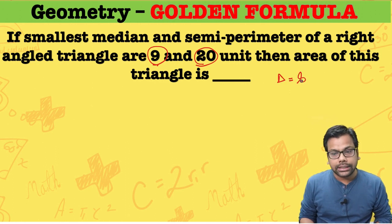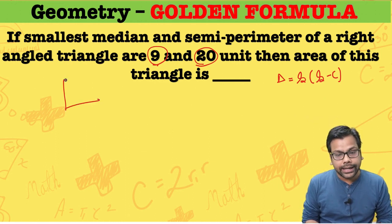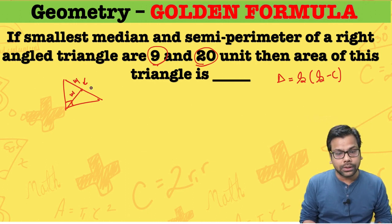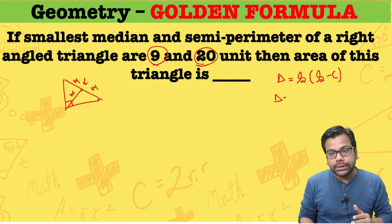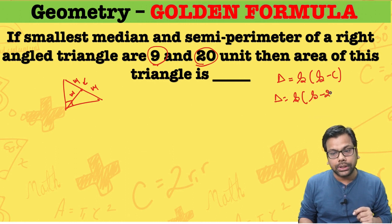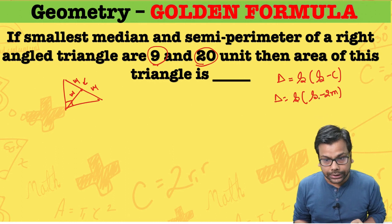Area of a right-angled triangle is nothing but semi-perimeter into (semi-perimeter minus the longest side). And we know that in a right-angled triangle, the longest side is double the shortest median. So in terms of the smallest median, the area equals semi-perimeter into (semi-perimeter minus 2 times the smallest median), because the double of the smallest median equals the largest side.